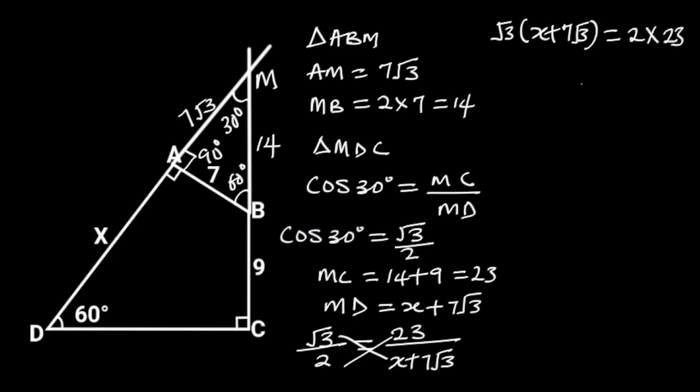On the left side, root 3 times X is equal to X root 3. And root 3 times 7 root 3 is equal to 21. On the right side, 2 times 23 is equal to 46.